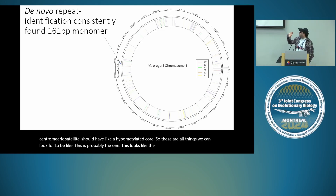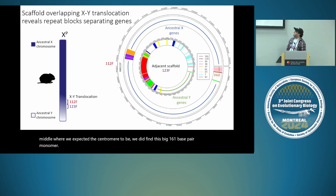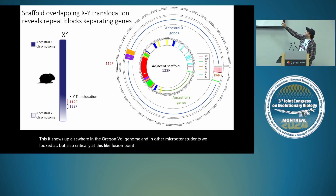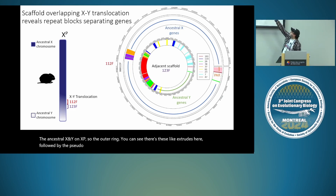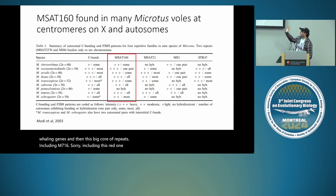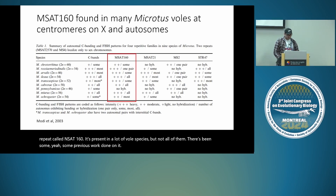Looking at the entirety of chromosome 1 in the creeping vole, right in the middle where we expected the centromere to be, we found a big 161-base-pair monomer. It shows up elsewhere in the oregoni genome and in other vole Microtus genomes, but also critically at the fusion point between the ancestral X and Y on XP. This turns out to be a known repeat called MSAT160, present in a lot of vole species but not all. Some previous cytogenetic work has been done characterizing it.